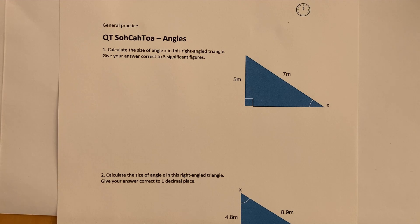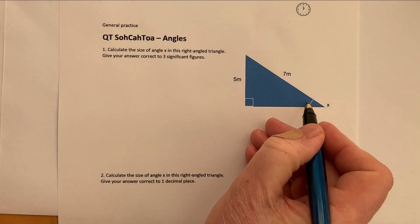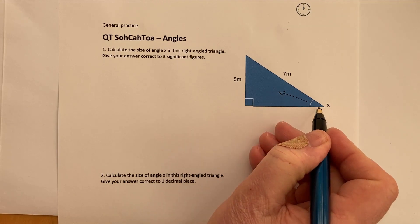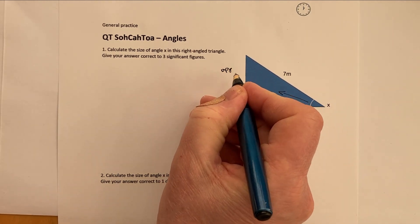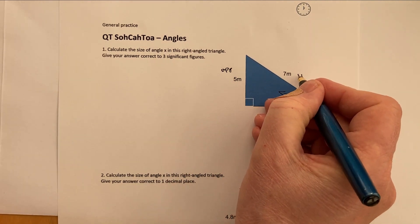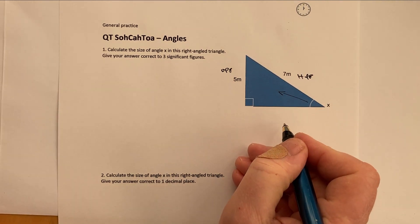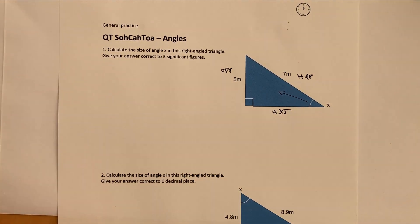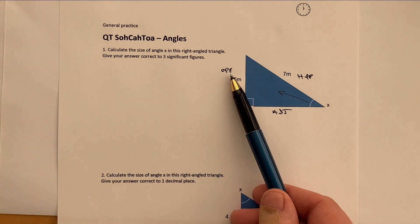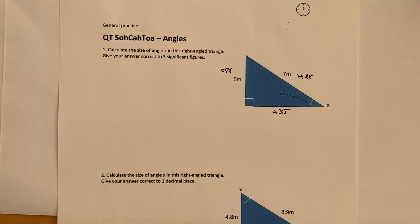So the first thing that you need to do really is label the triangle. What we look at is we say that opposite the angle that we're looking at is going to be this length here. The longest side in the triangle is going to be the hypotenuse and then the final side that's left is going to be the adjacent. Now just for the purposes of this video, I've not written this out completely as opposite and hypotenuse and adjacent, but hopefully that's okay for you to use this type of shorthand.